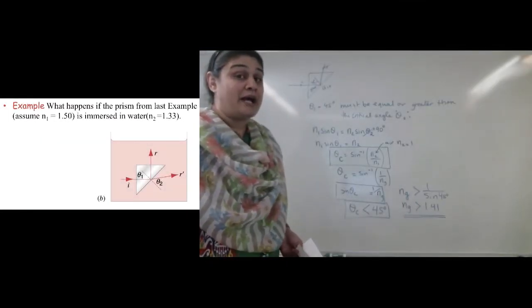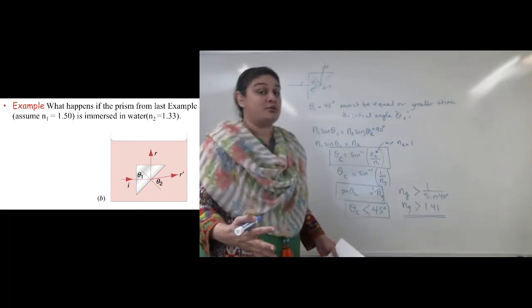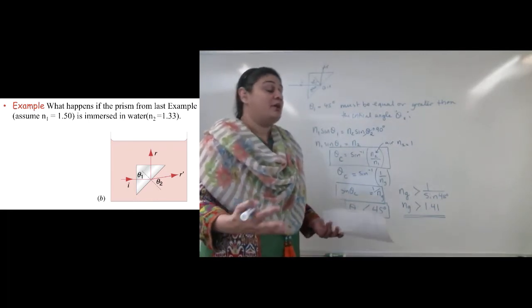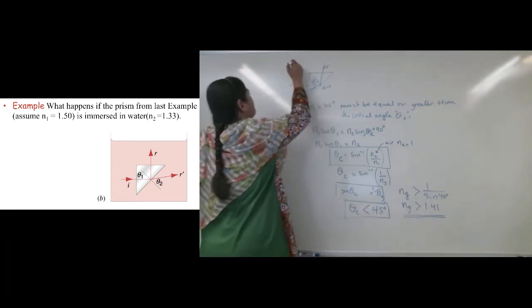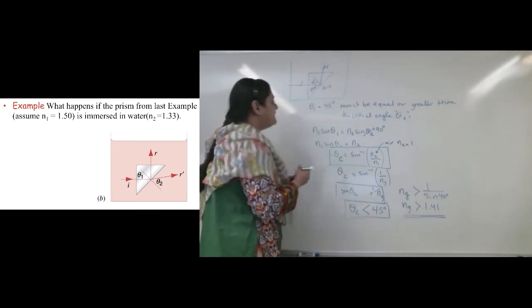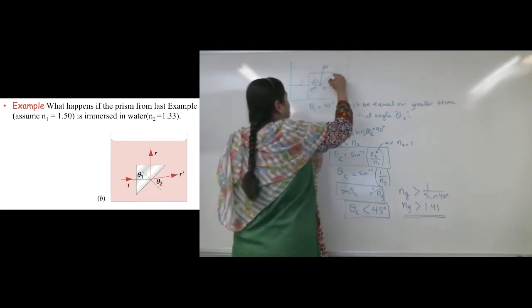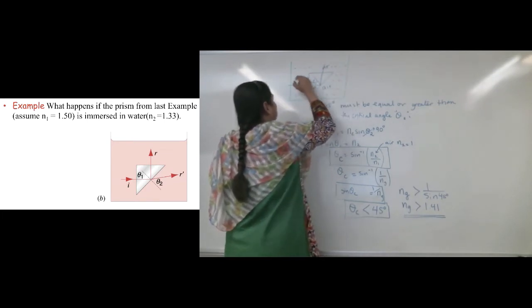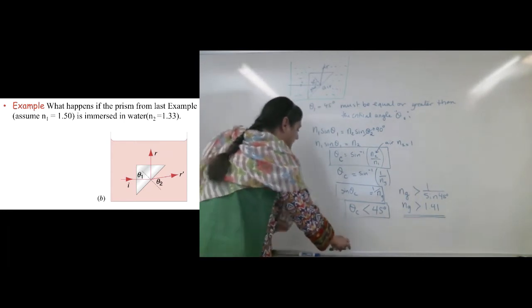what it's asking is what happens if this prism is now immersed in water with N equals 1.33. What happens in that case? That picture kind of looks like this. I'm going to put it in water and see what comes out. So, I have it in water now. So, imagine this is my water. I should have planned better. I should have done this with green and then put the water in.